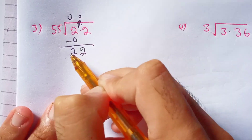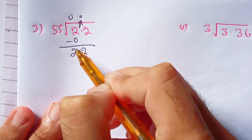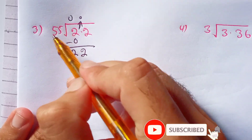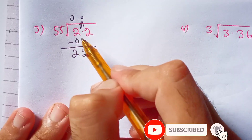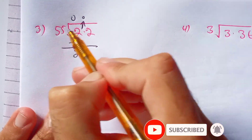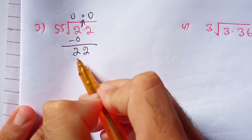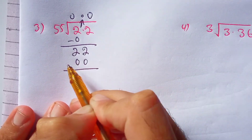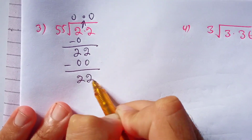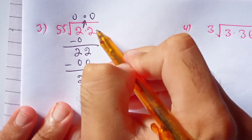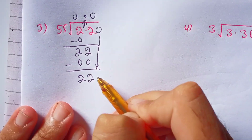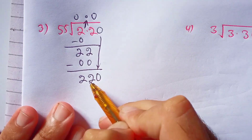But here 22 is again less than 55, so again we will multiply 55 by 0 to get a number less than 22. 55 times 0 is 0. Subtract 0 from 22, the remainder is 22. Now again put 0 in the dividend and bring it down near 22 to make it 220.